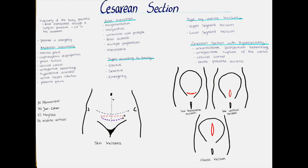Now we will talk about the types of cesarean section. We can differentiate cesarean sections according to the timing they occur. An elective cesarean section is done at a pre-selected time and can be scheduled according to the convenience of the mother and hospital staff — for example, a Tuesday morning when the patient is pre-hospitalized and prepared. This is usually scheduled at 39 weeks of pregnancy, and the risk of sepsis is minimized as good preparation in advance is possible.